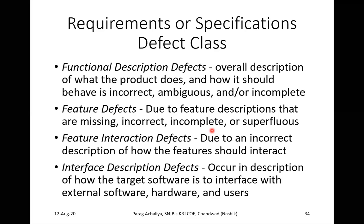Interface description defect occurs because of the interface description — specifically in the description of how the target software interfaces with external software, hardware, or the user. For example, on a website you have two buttons: Save and Cancel. You know the use of each, but if the code for both buttons is reversed, that is a defect occurring due to the interface. That is what the interface description defect is.